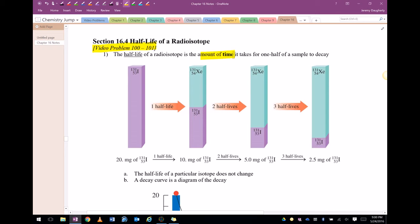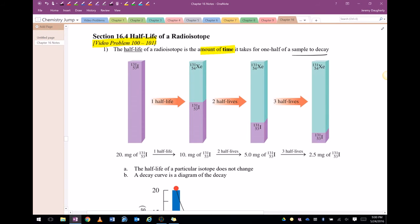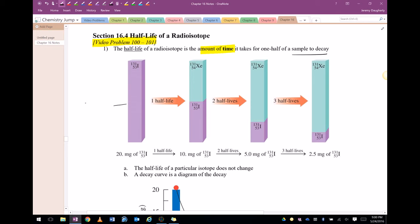So half-life is the amount of time it takes for one half of a sample to decay. And so what happens, here's iodine-131, this is the radioactive source. This is the sample that's going to decay.